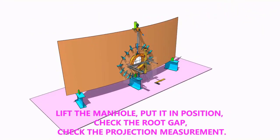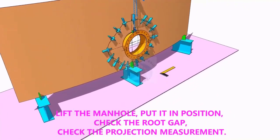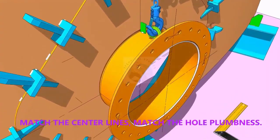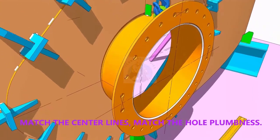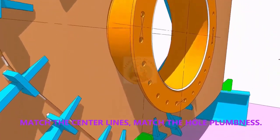Put the manhole in its position. Correct the plumbness. Correct the projection of the manhole. Correct the gap. Check again the plumbness.